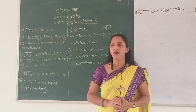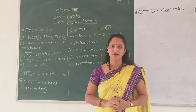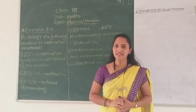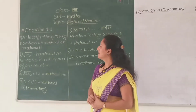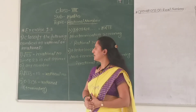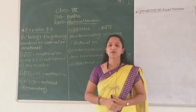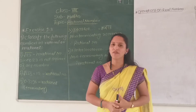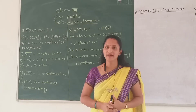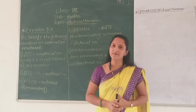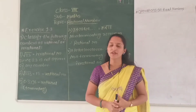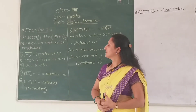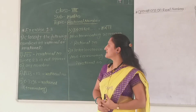In our previous session, we completed exercise number 1.3. I hope all of you understood that exercise. In today's session, first we will complete the last example for exercise 1.3. Before solving this example, recall that the decimal expansion of a real number is terminating, non-terminating, or recurring. And the decimal expansion of an irrational number is non-terminating and non-recurring. Remember these two statements and let's go to example number 9 for exercise 1.3.